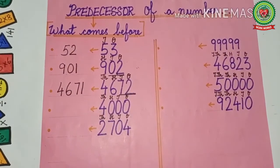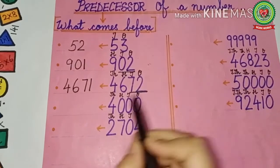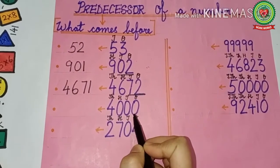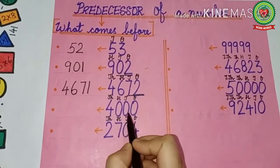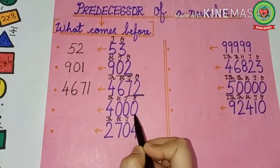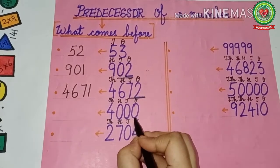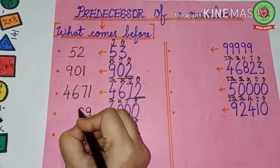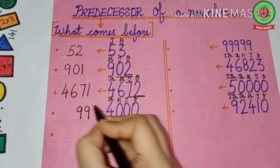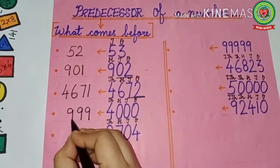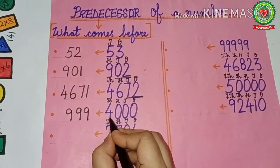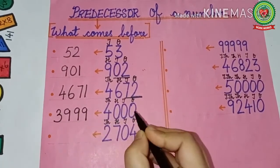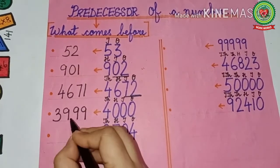Next number is 4000. How will we write the predecessor of 4000? Remember students — whenever there is a 0, before 0 comes 9. In the ones place, 0 is there, so we write 9. Again 0 is there in tens, so write 9. Again 0 is there in hundreds, so write 9. For all the zeros we write 9 until the next number. What is that next number? It is 4. What comes before 4? That is 3. So the predecessor of 4000 is 3,999.